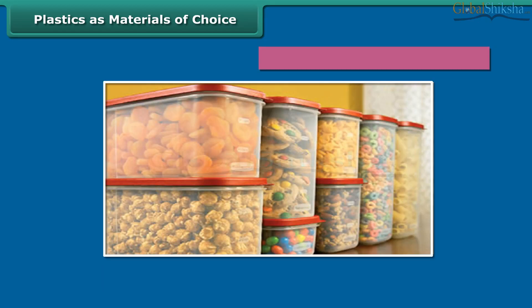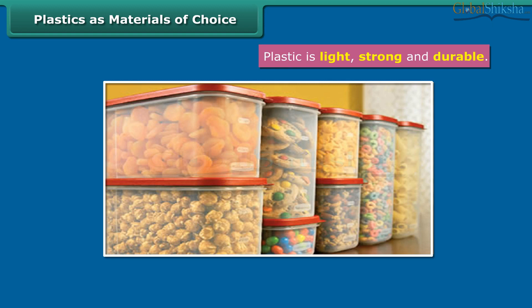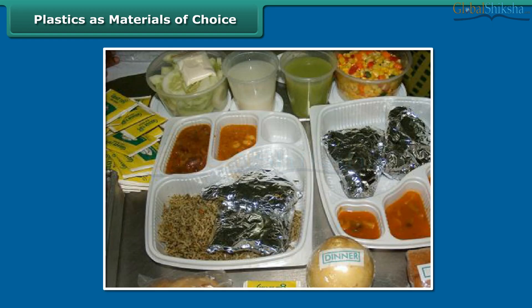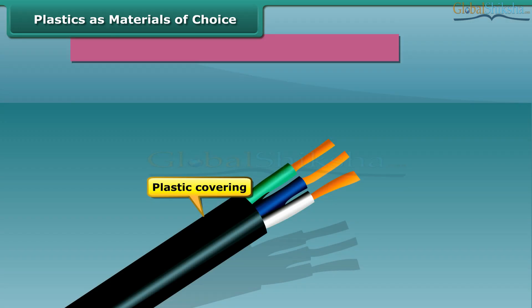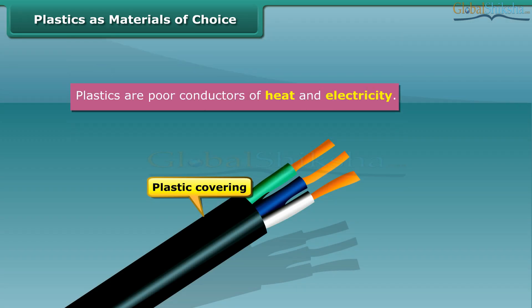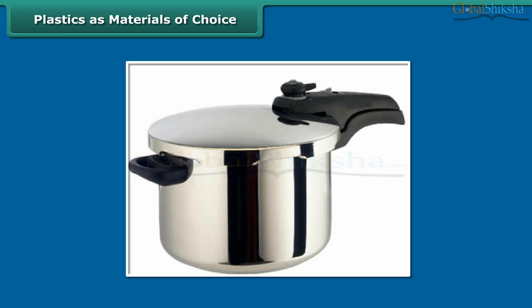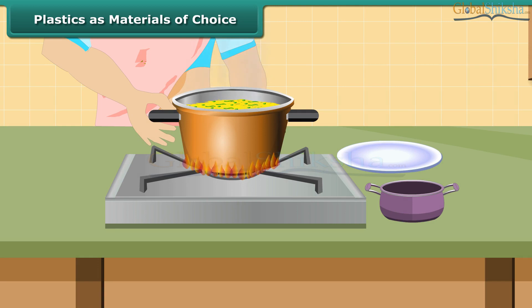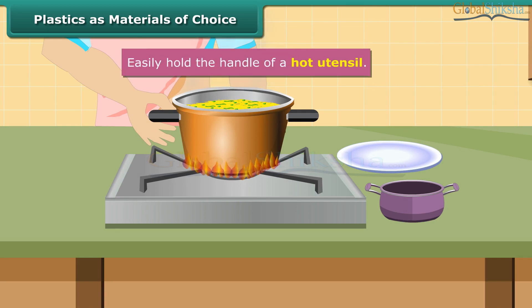Why are plastics so widely in use? The plastic containers are mostly used for the storage of food grains, pickles, salt and spices, since these are relatively non-reactive and impermeable to moisture. Since plastic is a poor conductor of electricity, the electrical wires have plastic covering. The utensils used for cooking have plastic handles, and plastics being a poor conductor of heat, we can therefore easily hold the handle of a hot utensil.